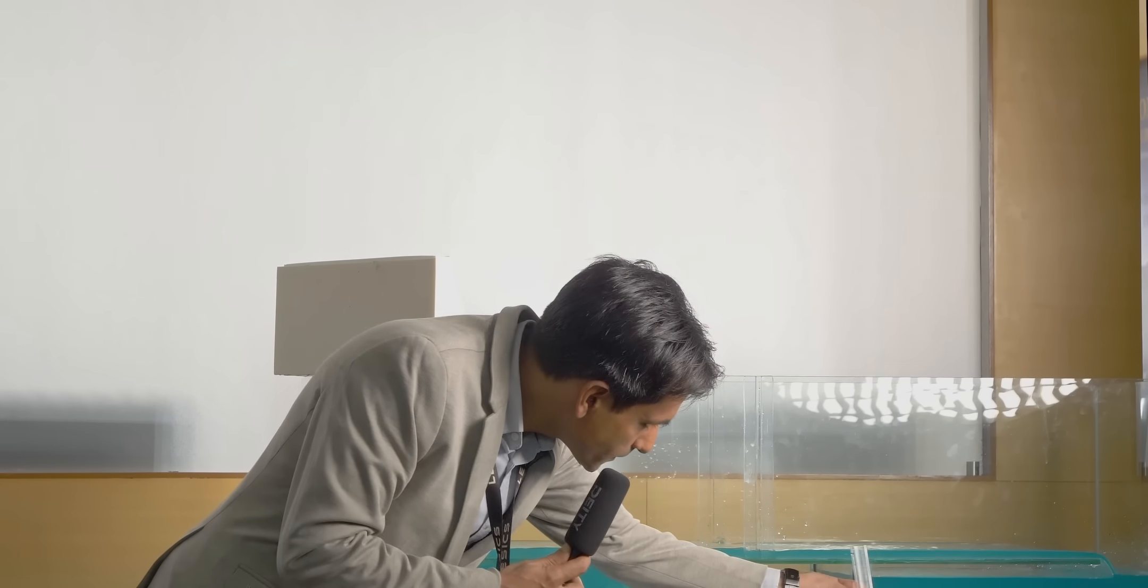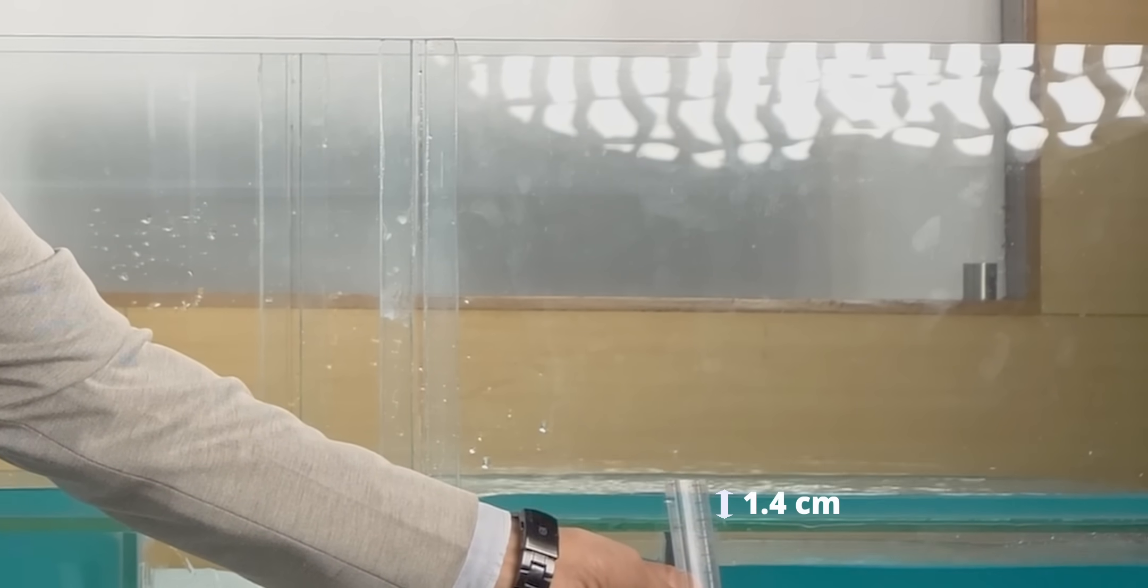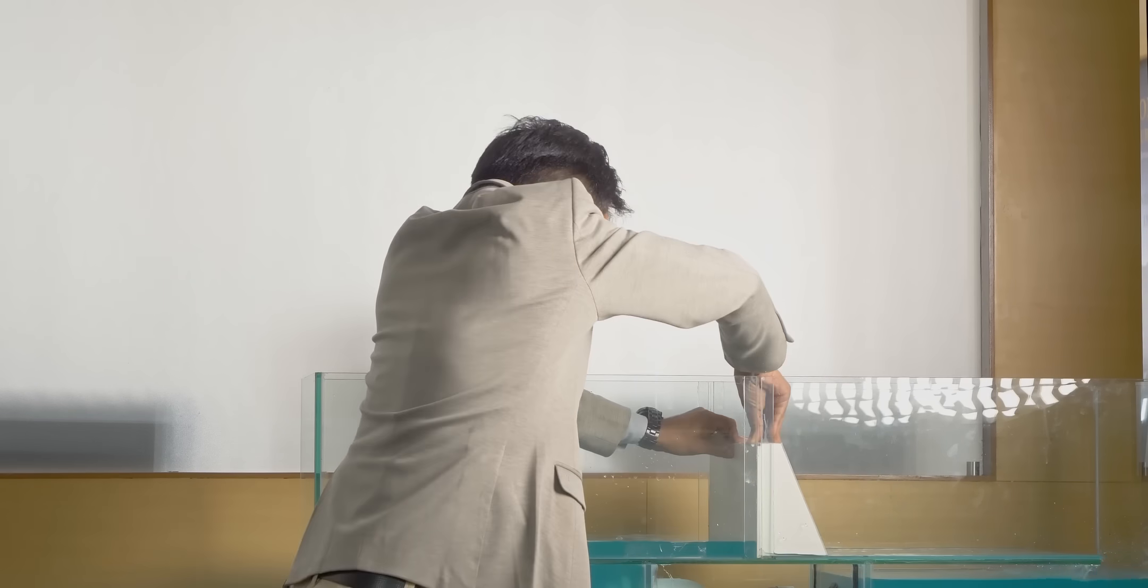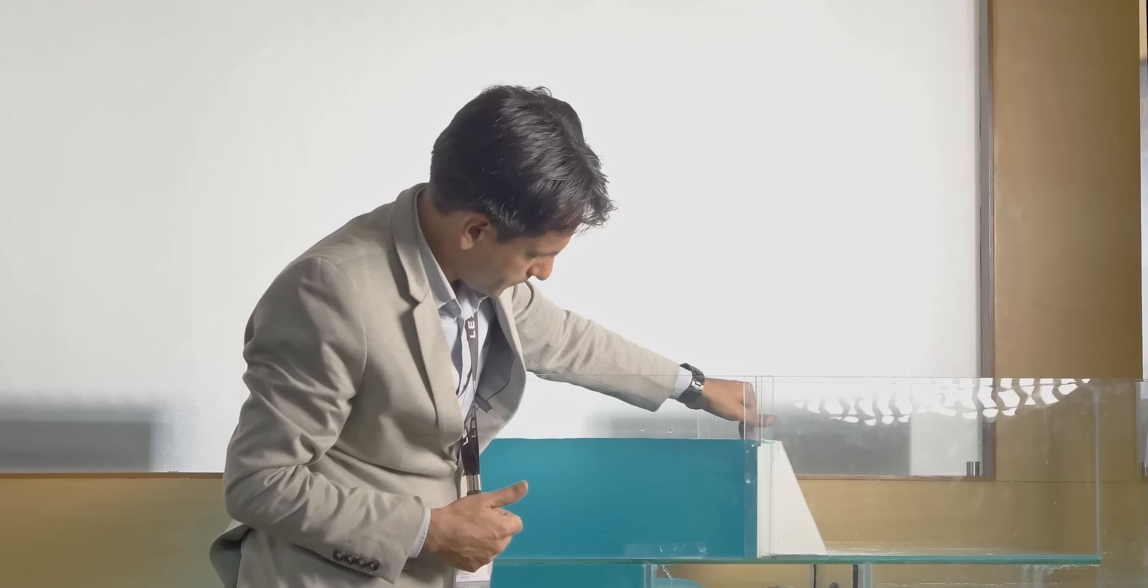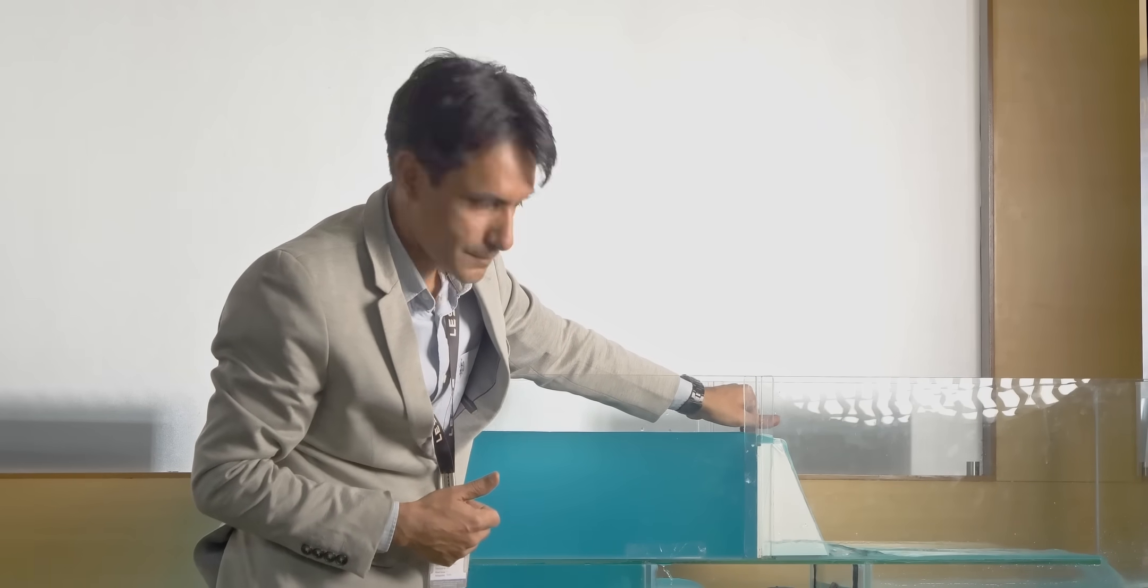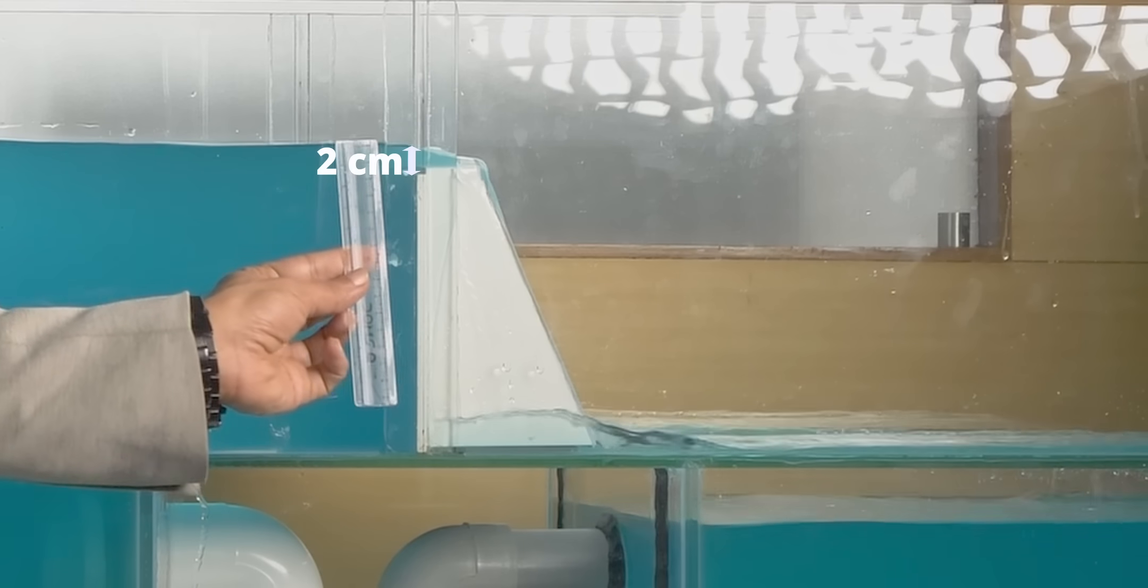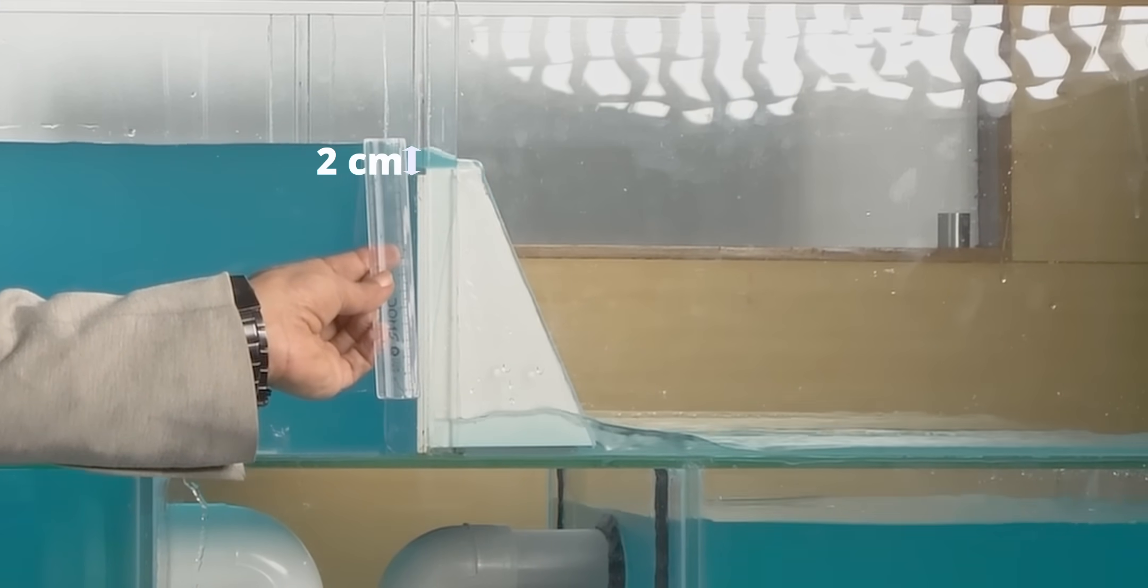This is an open-channel flow and it has a water level height of almost 1.4 centimeters. Now, let me introduce this weir and see what happens to this water level height. After the introduction of the weir, at the upstream side, water level height is almost 2 centimeters. It has increased.